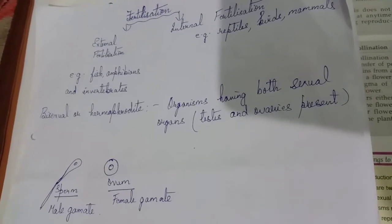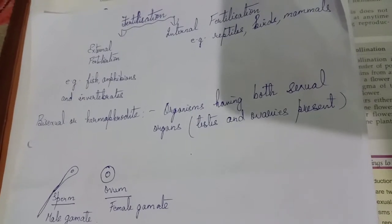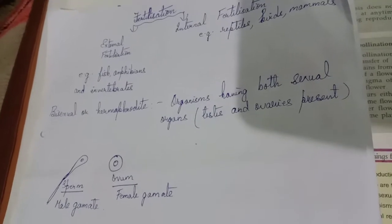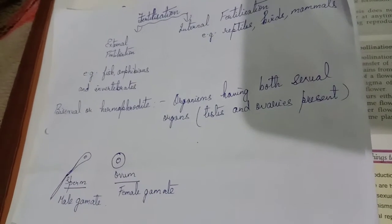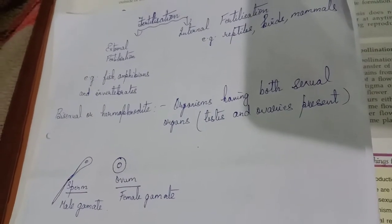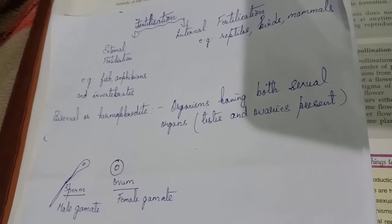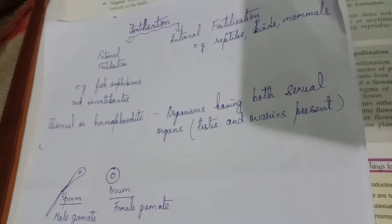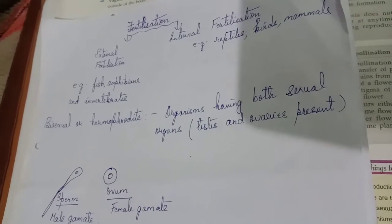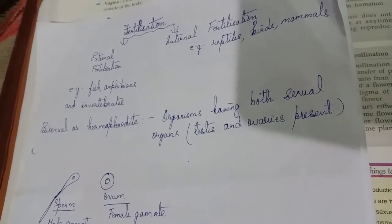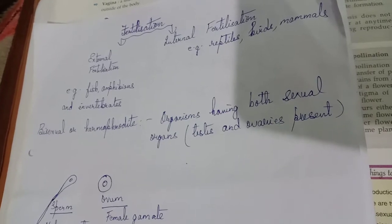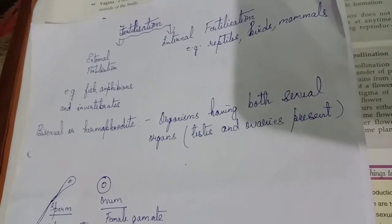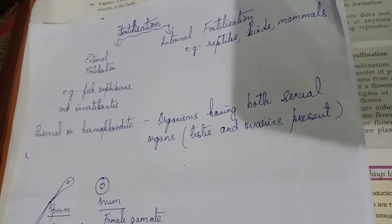Internal fertilization means when the fusion of the male gamete and the female gamete takes place inside the body of the female. This is called internal fertilization. We find it in reptiles, birds, and mammals.